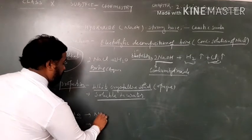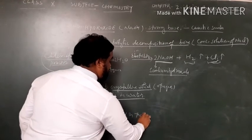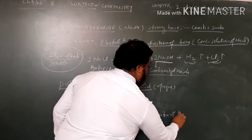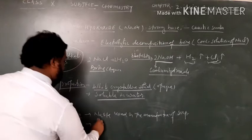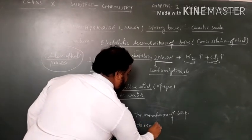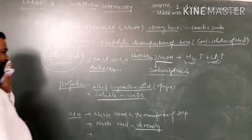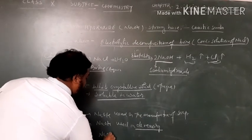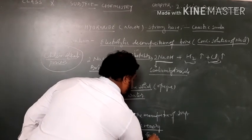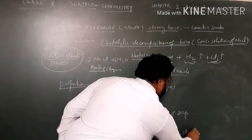NaOH is used in the manufacture of soap. NaOH is used in degreasing. NaOH is used in the formation of many chemicals.